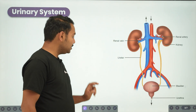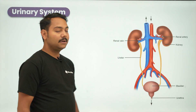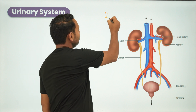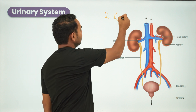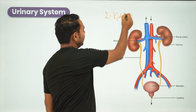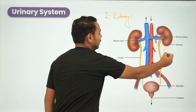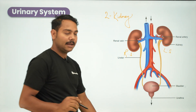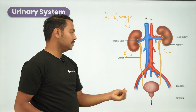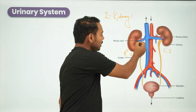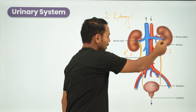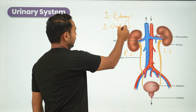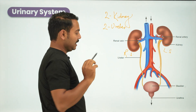The urinary system consists of two kidneys — a left kidney and a right kidney. Connected to each kidney is a ureter.